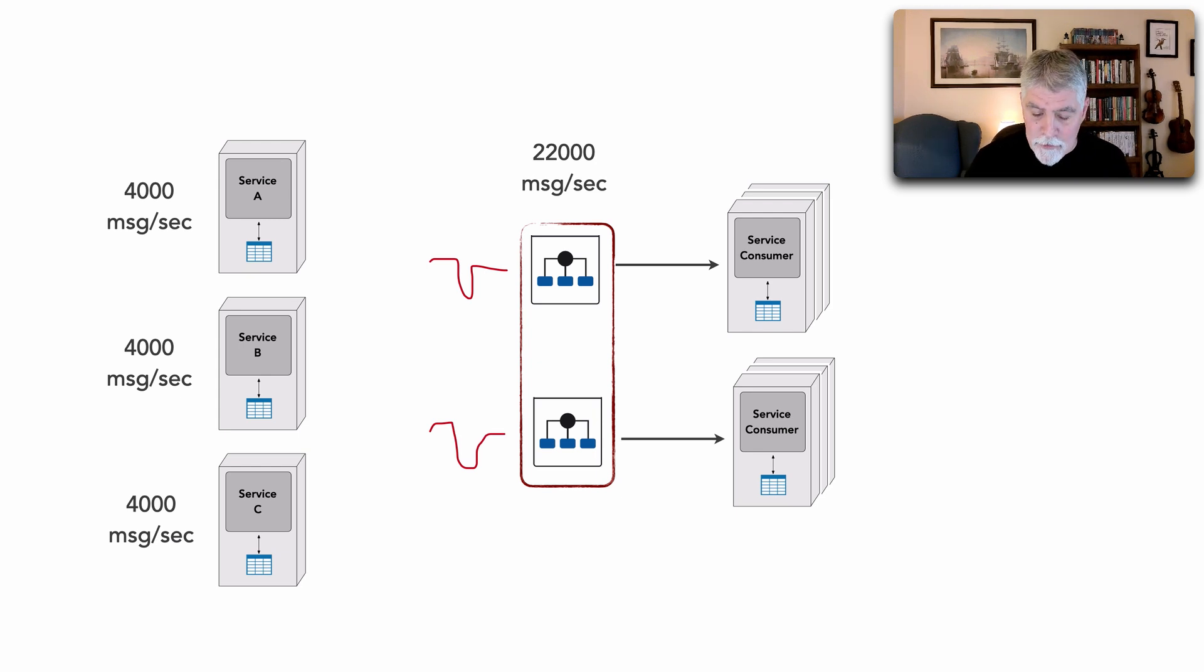Now what happens is this: each service connects to both of these brokers. And correspondingly with our 4,000 messages a second, this gives us a growth of 10,000 additional messages a second. So now each service makes a connection to each broker, A and B,